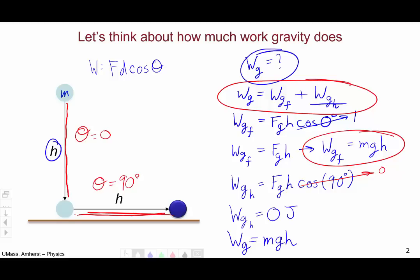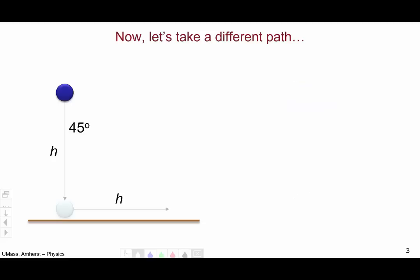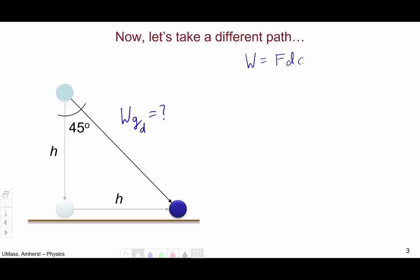Now let's consider moving the ball to the same final position from the same initial position via a different path. Instead of going straight down and straight over, let's move at a 45-degree angle directly from the initial position to the final position. Let's figure out the amount of work done by the force of gravity along this diagonal path. As before, we start from the definition of work: force times distance times cosine of the angle in between.